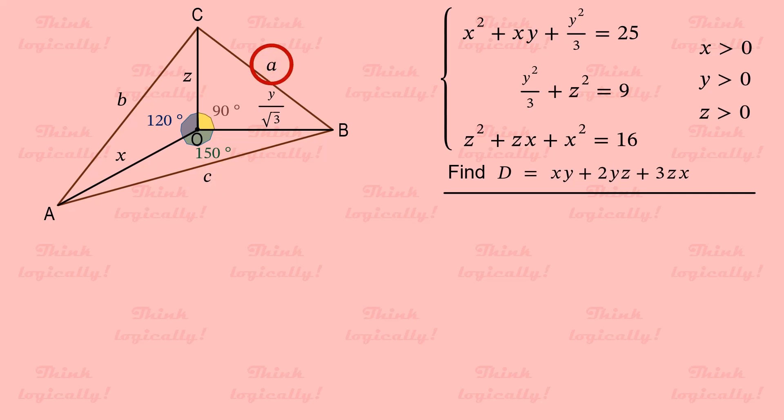Side A can be found from triangle BCO using Pythagoras theorem. A squared equals y over square root of 3 squared plus z squared. After simplification, we get exactly the left hand side of the second equation of the system. Which according to the equation equals 9. Therefore A squared equals 9 and A equals 3.